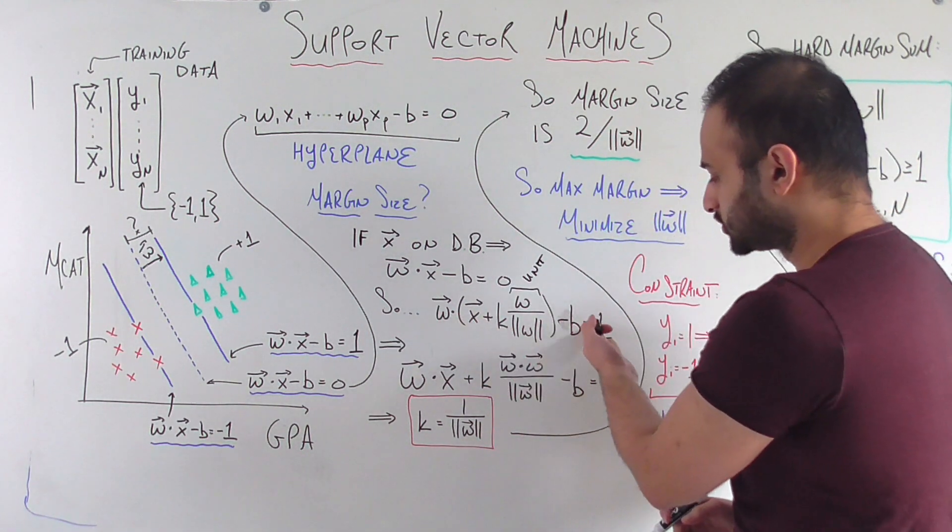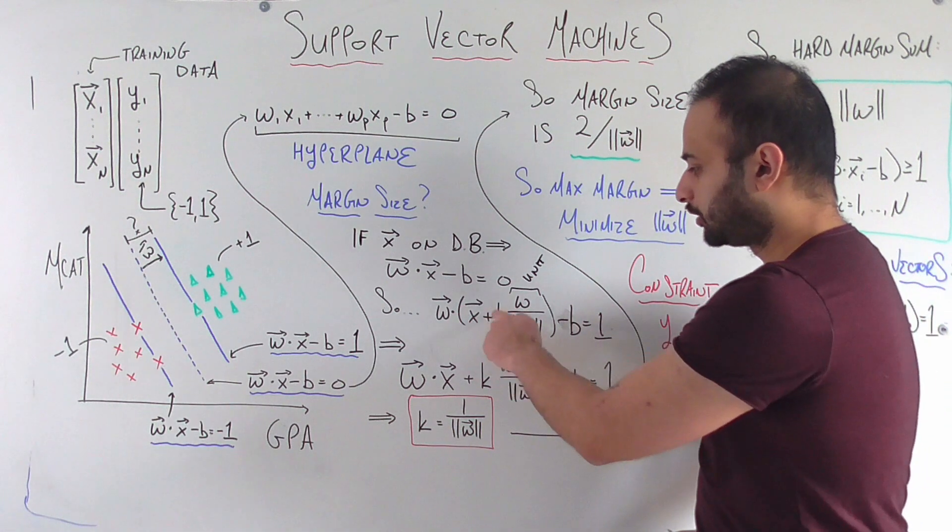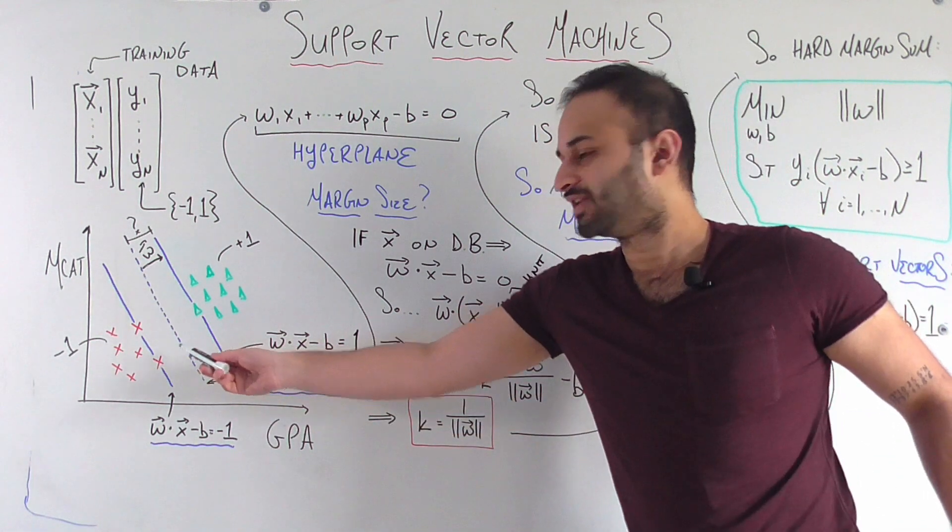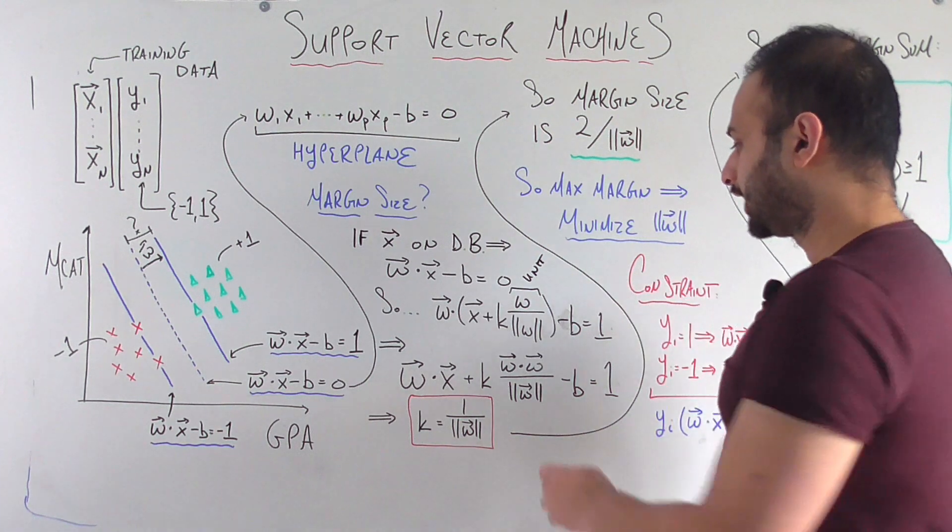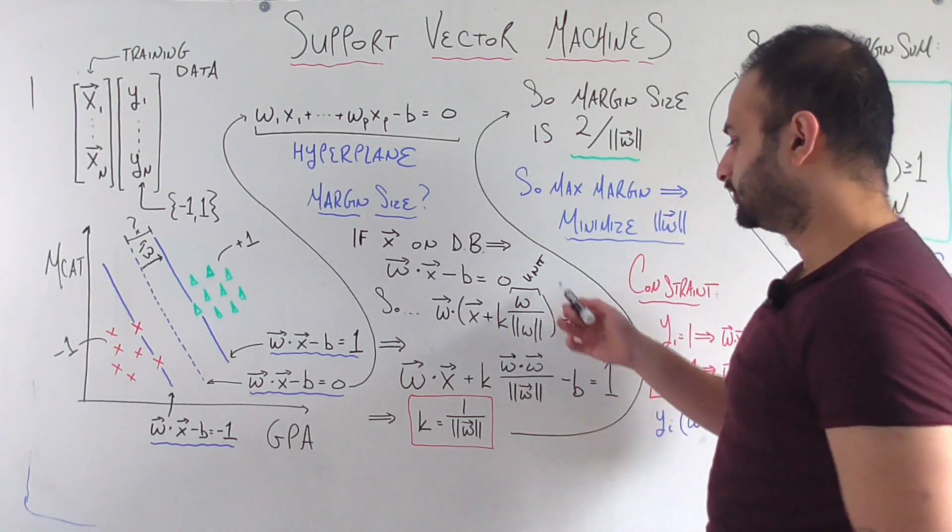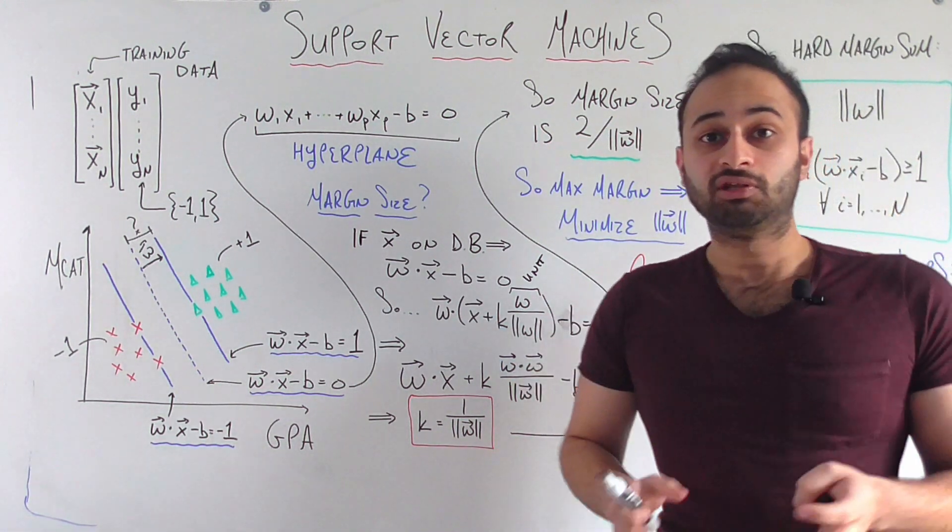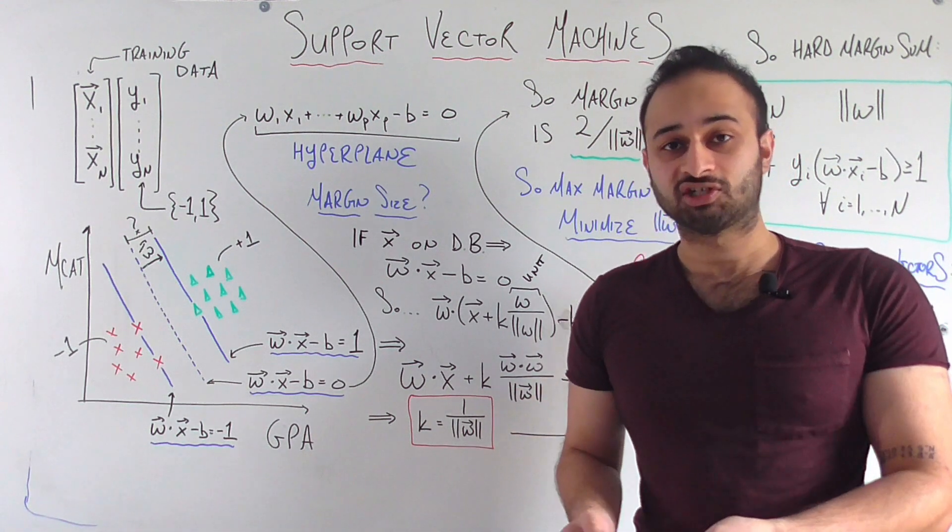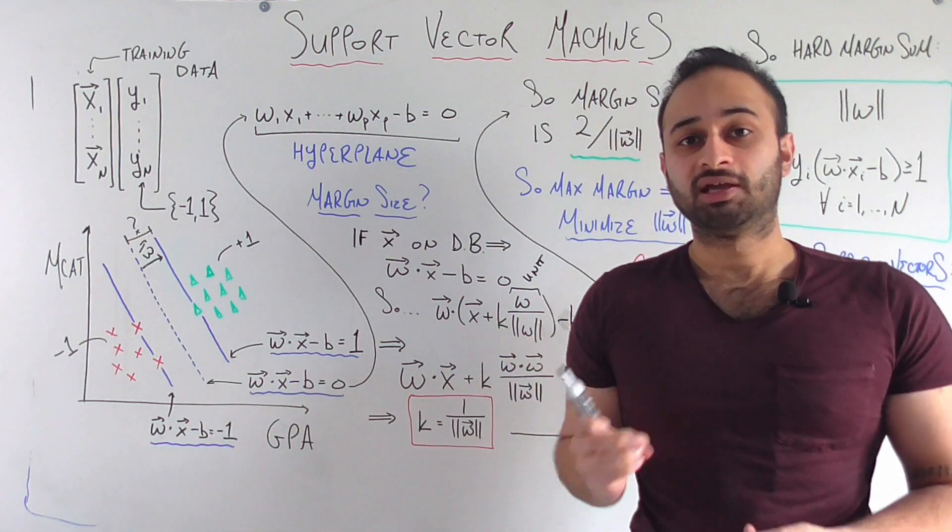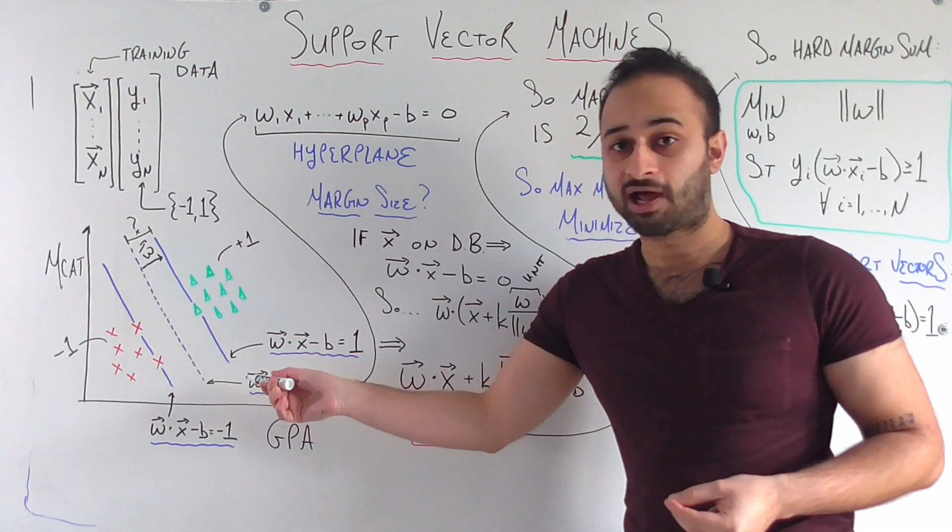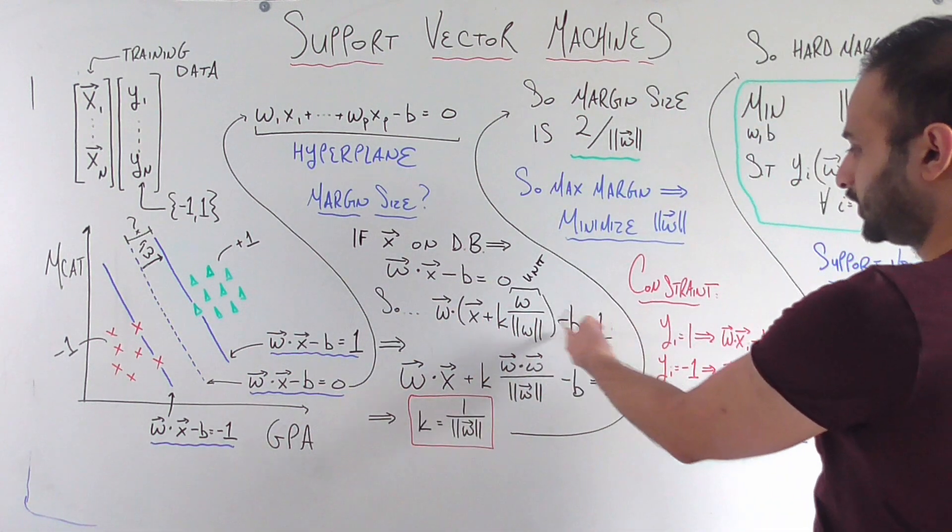So this is a unit vector who is in the same direction as w. So the story that this equation is telling is that if I'm at my current vector x, who again is on the dashed decision boundary, and I walk k units in the w direction, how many units do I need to walk? So what is k such that the new location I'm at is on this top blue line whose equation is given here.